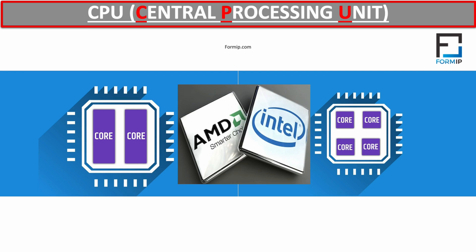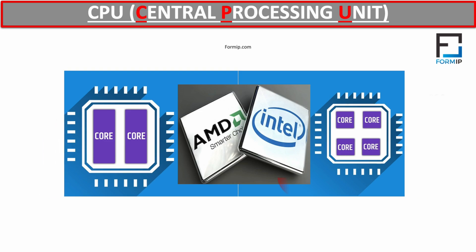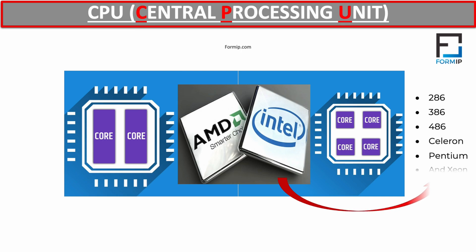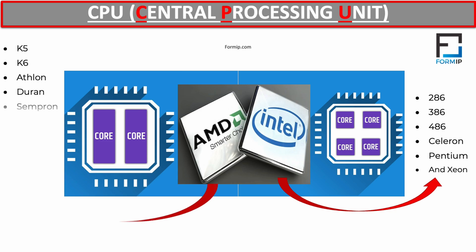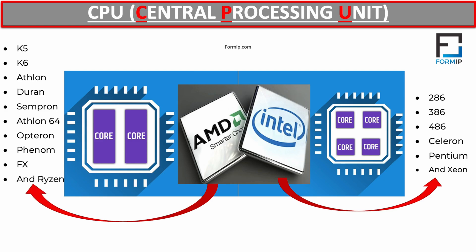The two largest processor manufacturers are Intel and AMD — Advanced Micro Devices. Intel is the largest manufacturer of processors, founded in the late 1960s. It dominated the CPU market for a number of years until AMD rose to become its main competitor. Some Intel processors include the 286, 386, 486, Celeron, Pentium, and Xeon. AMD is the second largest processor manufacturer, also founded in the 1960s, but it wasn't until the mid-90s that it began competing with Intel. Some AMD processors include the K5, K6, Athlon, Duron, Sempron, Athlon 64, Opteron, Phenom, FX, and Ryzen.